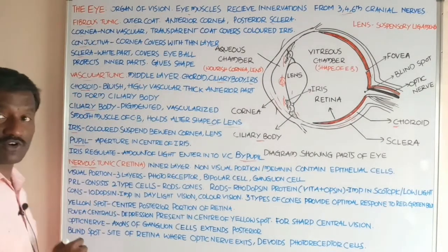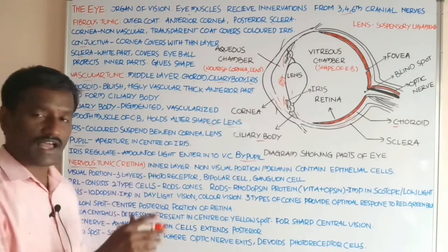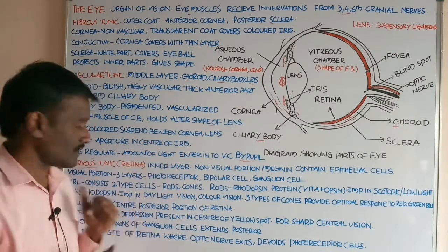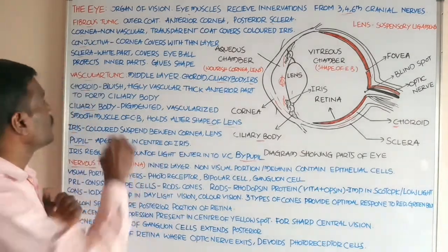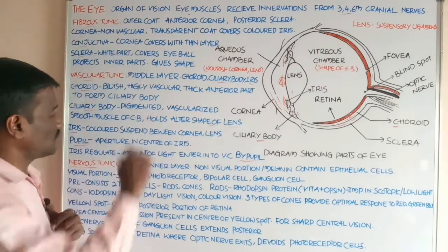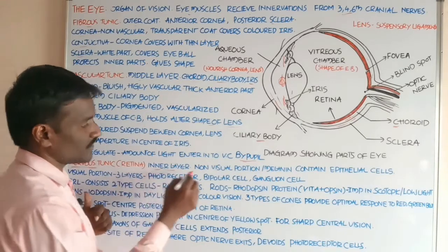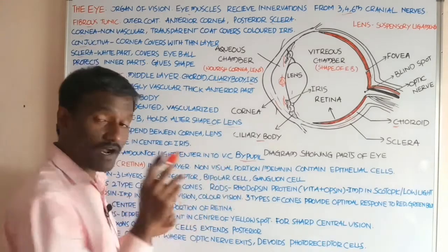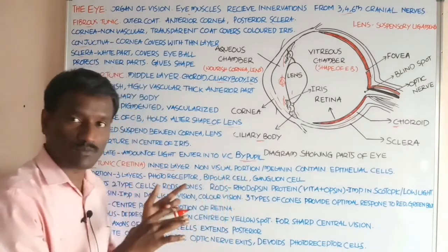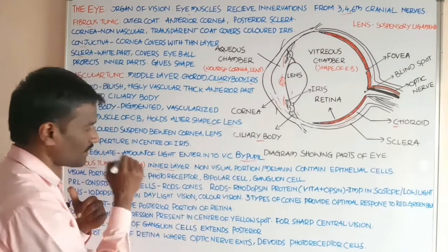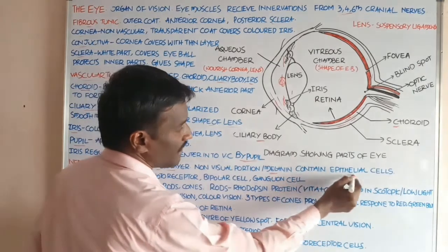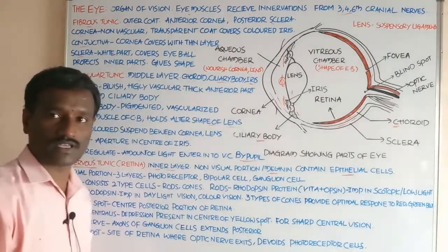The nervous tunic is also termed the retina. Tunic means layer. The nervous tunic is the inner layer and contains two types of portions: the non-visual portion and the visual portion. The non-visual portion of the retina is also called the melanin portion and contains epithelial cells.